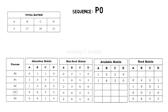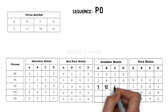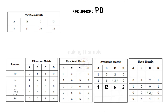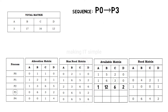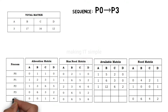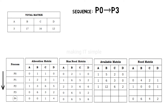So now the updated matrices will be as follows, available resources will get updated. P3's need is completed. P3 will get added to the sequence, as it is executed after P0. Now let us check process P4. Note that we are going in a serial order, like P1, then P2, and so on, but you can solve it in any order.